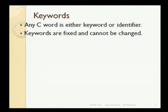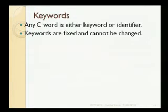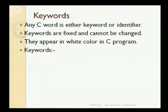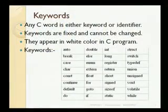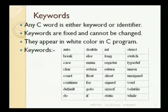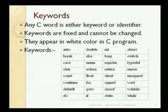Any C word is either a keyword or an identifier. Keywords are fixed and cannot be changed — they are inbuilt in C and there are 32 types of keywords. When we write anything in C, if it appears highlighted in white in the editor, it is a keyword. We cannot use keywords as variable names or constants. Keywords include: auto, double, int, struct, break, and many others used for loops, statements, conditions, and declaring integers.